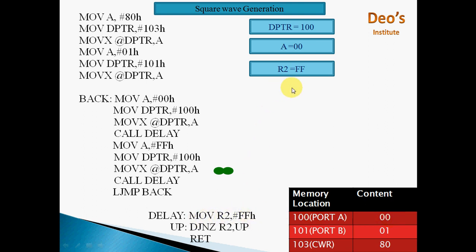In the delay procedure: MOV R2, #FFH. Then DJNZ R2, UP — decrement R2 and jump if not zero to UP. So R2 is decremented each iteration and the same instruction loops until R2 becomes 0. When R2 becomes 0, it exits the loop and executes RET. While this procedure runs, Port A holds value 00H, so DAC continuously outputs its analog equivalent.